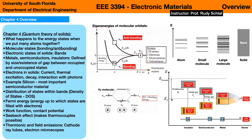We'll then discuss the work function — the energy required to move an electron from the Fermi energy up into the vacuum where it's free. The Fermi energy is another major topic of this chapter. Once we understand the work function, we go on to the contact potential — basically the voltage between two materials with different work functions — which we can utilize with the Seebeck effect to make thermocouples. At the end of chapter four, we also discuss thermionic and field emission: how we can get electrons from the Fermi level into the vacuum efficiently by heating an electrode or by applying a voltage to it, giving us electron beams for cathode ray tubes and electron microscopes.